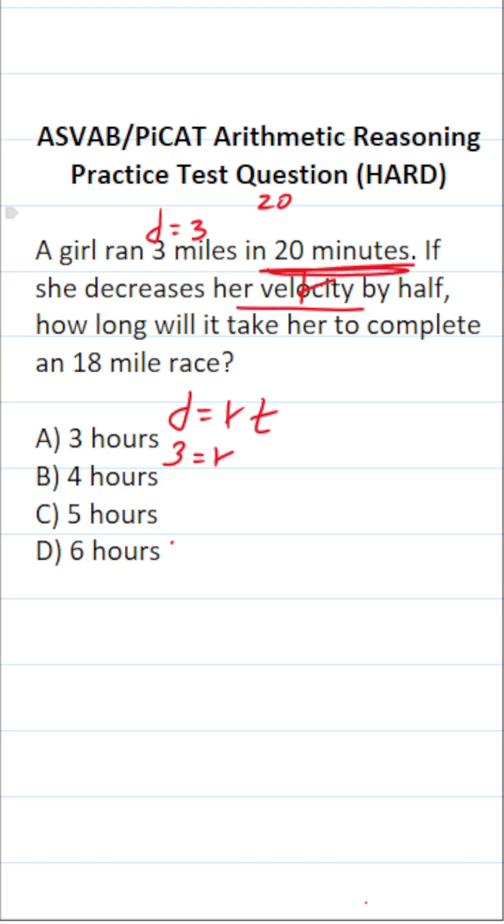So I'm going to convert 20 minutes to be in terms of hours by dividing it by 60. Since there are 60 minutes in an hour, cross out these corresponding zeros. This becomes 2 sixths. Divide this by a common factor of 2. 2 divided by 2 is 1, 6 divided by 2 is 3. So 20 minutes is the same thing as one-third of an hour.